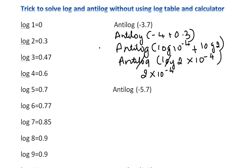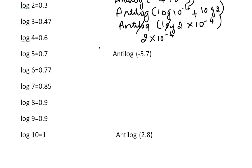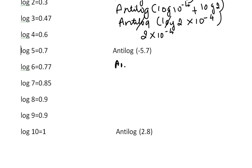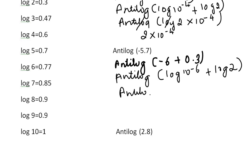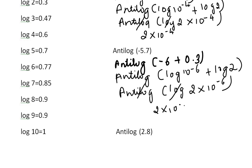Now the second question: anti-log of minus 5.7. Minus 5.7 can be written as minus 6 plus 0.3. Following the same steps, this becomes anti-log of log 10 to the power of minus 6 plus log 2. Using the log AB formula, we get log of 2 into 10 to the power of minus 6. Once the anti-log and log cancel, the answer is 2 into 10 to the power of minus 6.